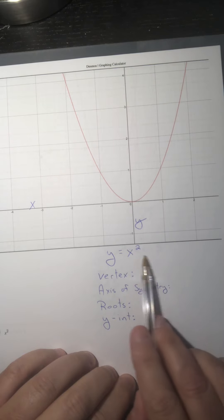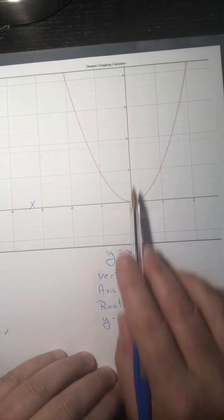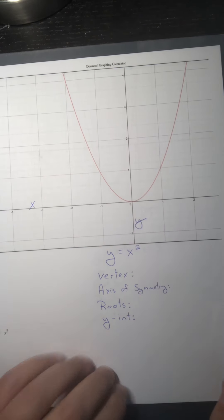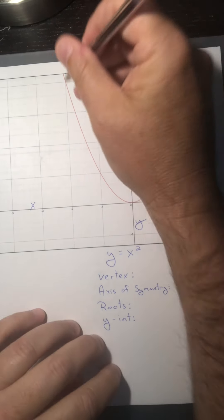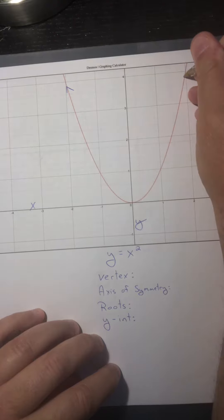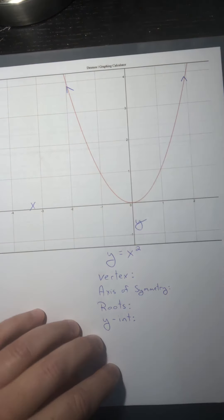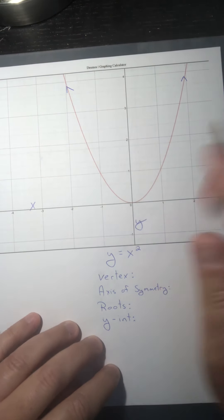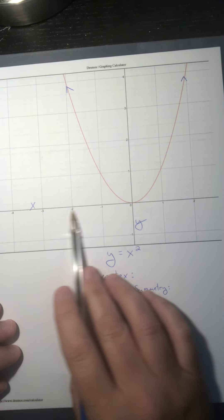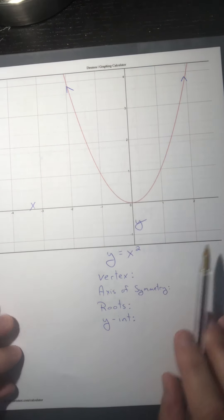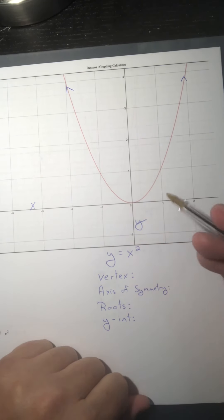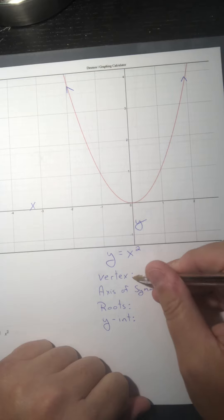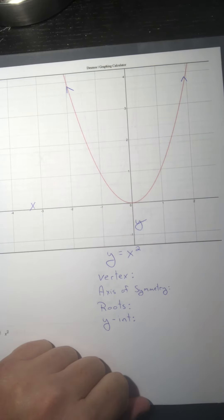This is the basic graph for a quadratic — it kind of looks like a U. There are no arrows on this one, but realize those would keep going on forever. The x-axis is right here and the y-axis is here. We're going to talk about a few characteristics of these graphs. The first one is the vertex.